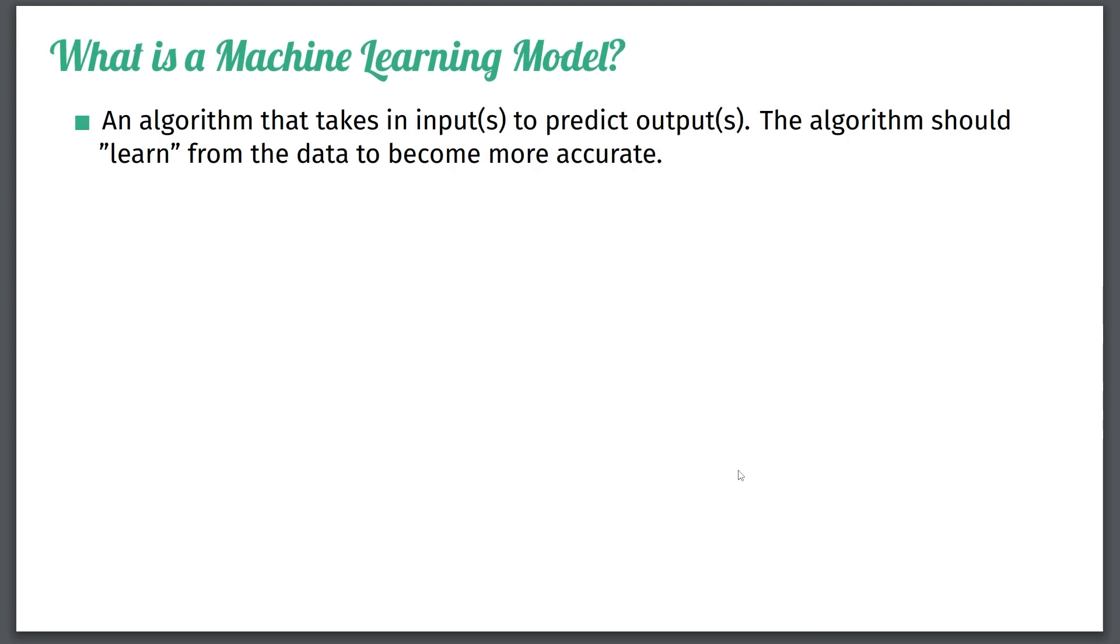And this leads us to the definition of machine learning. So a machine learning model is an algorithm that takes inputs to predict outputs, but specifically the algorithm should learn from the data to become more accurate. So machine learning models are pieces of software that heavily use the data at hand to improve the software in such a way that it can make accurate predictions.